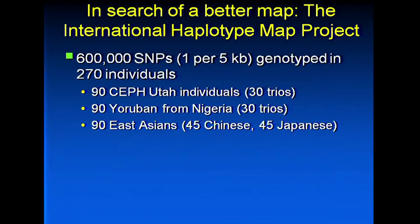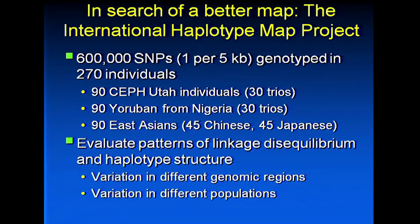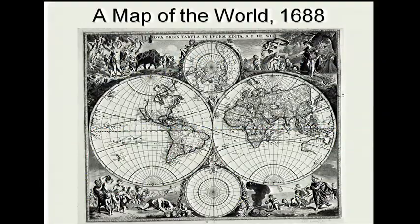In the original HapMap project, 600,000 SNPs — about one every 5 KB — were genotyped in 200 individuals from three populations: CEU Utah representing Northwest Europe (30 trios), Yorubans from Nigeria (30 trios), and 90 East Asians. By no means a complete sampling of human diversity, but it gave insight into three major populations, evaluating patterns of linkage disequilibrium and haplotype structure to understand how much variation exists in different genomic regions and how much variation there is among populations when LD is used as a gene mapping tool. The map of LD improved significantly — perhaps like the world map in the late 1600s, with major continental regions now well mapped out.